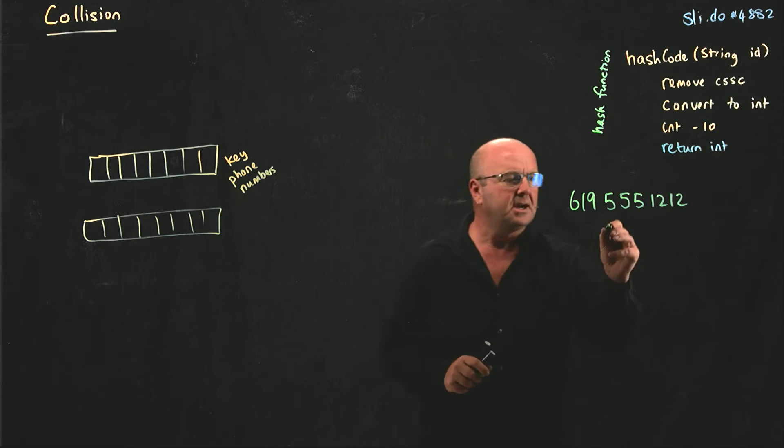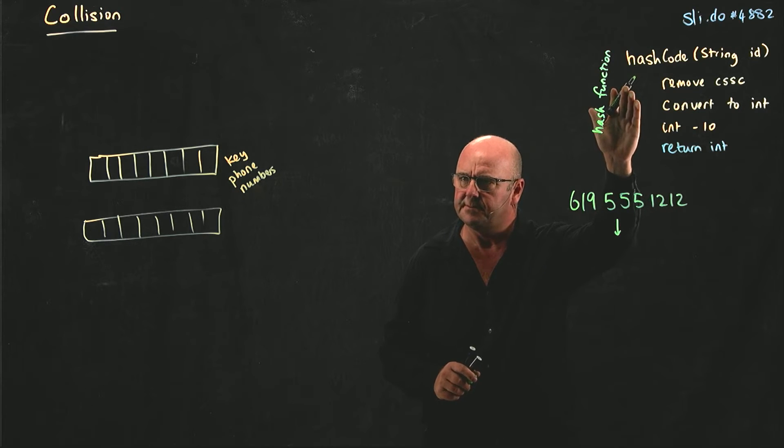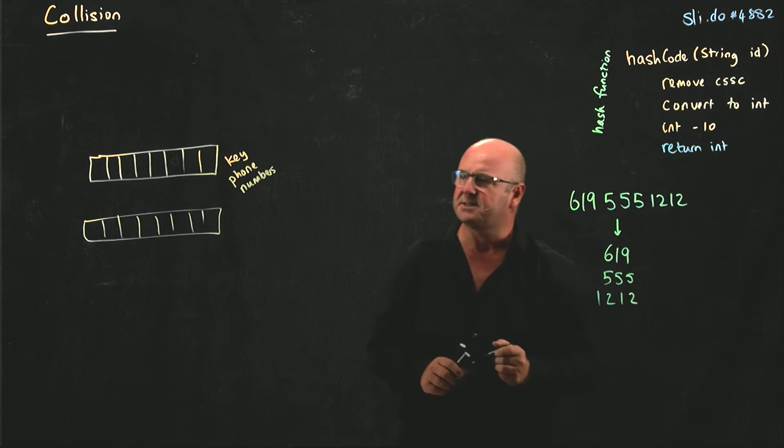And so I could come up with a hash function that takes that phone number and let's say we just add up the three parts of it.